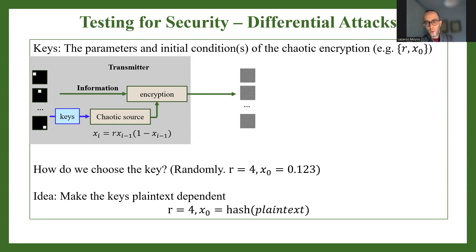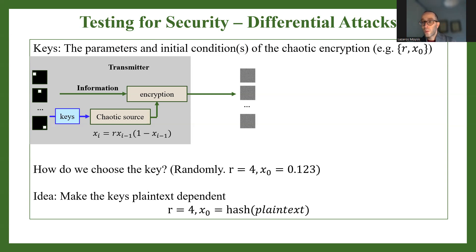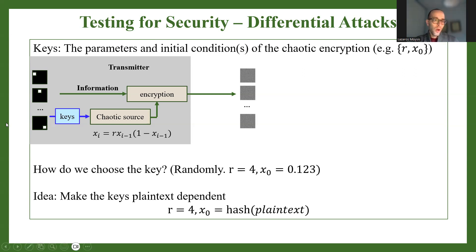Ideally, all parameters should be plaintext-dependent. The key effect of this change is that every time the attacker modifies their plaintext — even by changing only one pixel — the initial conditions or key values immediately change. This triggers the so-called avalanche effect, which chaotic systems inherently possess: changing one initial condition or parameter causes an avalanche effect in the time series. As a result, although the plaintexts differ by only one pixel, the ciphertexts will be completely different from each other.